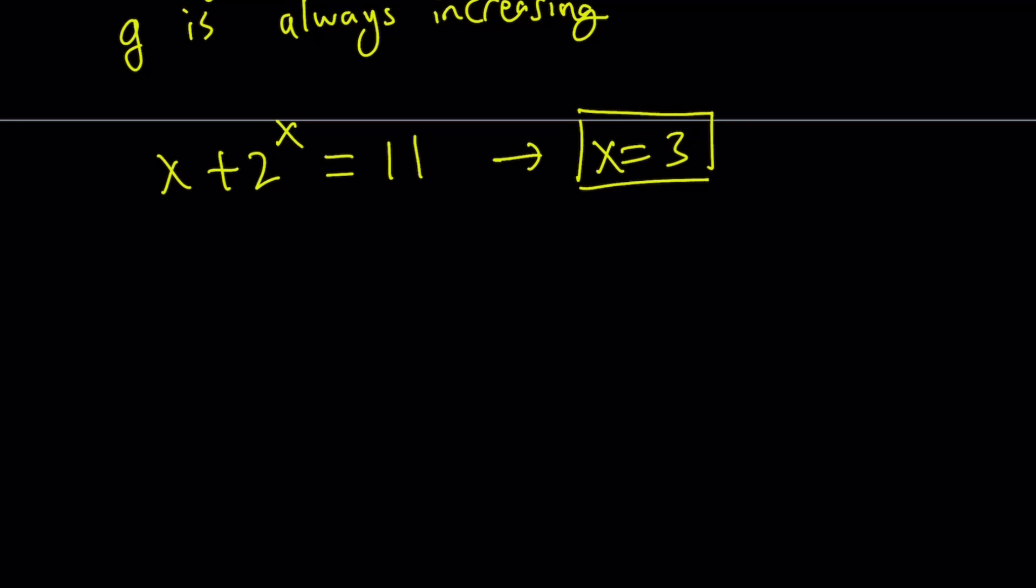Alright, great. So this gave us two x values we're going to substitute. But here's another question: Is there any analytical way to solve for x + 2^x = 11?